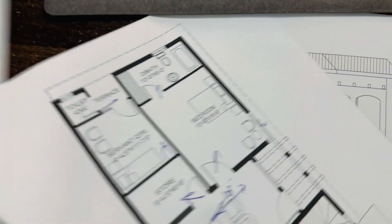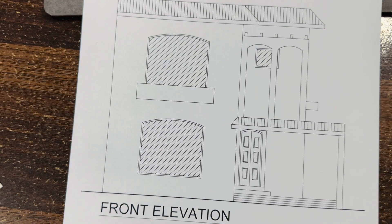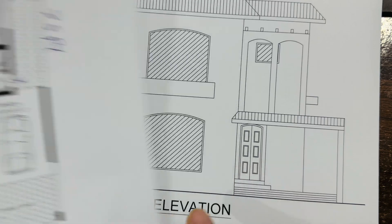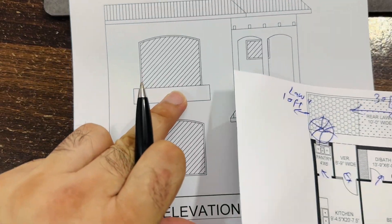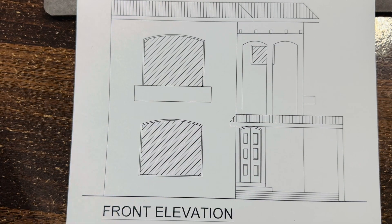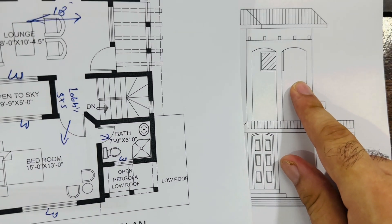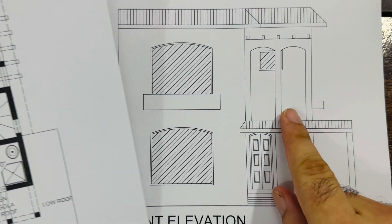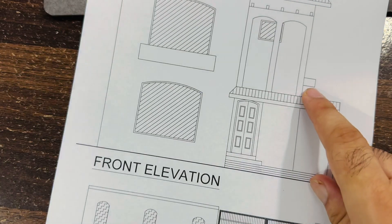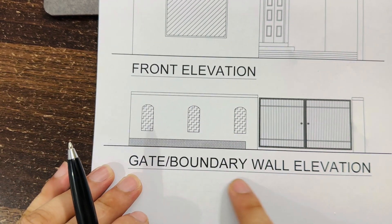This is a toilet for the servant quarter, and this is the terrace. This is one of the best designs for the ground floor and first floor. If you see the elevation — this is the ground floor, and you can see from the car porch the windows on ground floor and first floor clearly. You can also see the door design and this projection, which you can call a chajja or shade. This is the front elevation and this is the gated boundary wall.